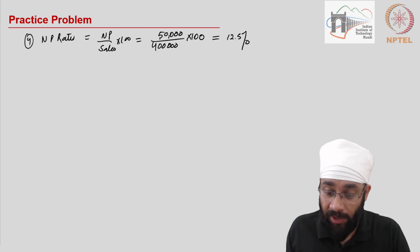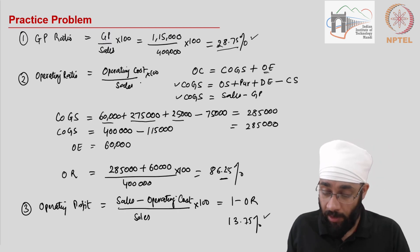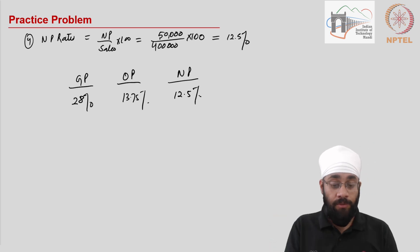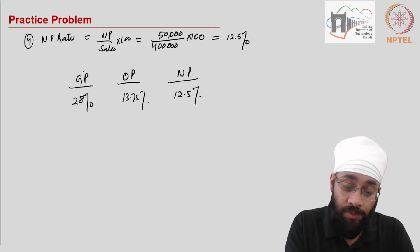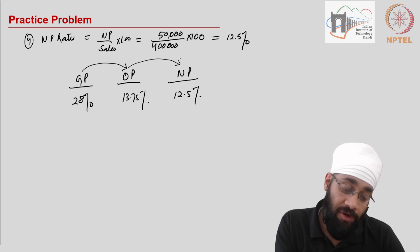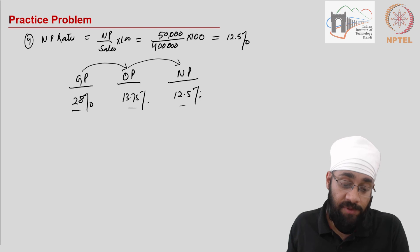Now you started with 28%. The gross profit ratio was 28%. And then your operating profit ratio went down to 13.75%, and now your net profit ratio is 12.5%. So I hope you know, logically it makes sense as well. From gross profit you pay some expenses and you have operating profit. And then you pay non-operating expenses and finally you have net profit, 12.5%. So whenever you are doing these calculations also look at if all these ratios together make sense, do they support each other in terms of your calculations so that you know you have not made any mistake.